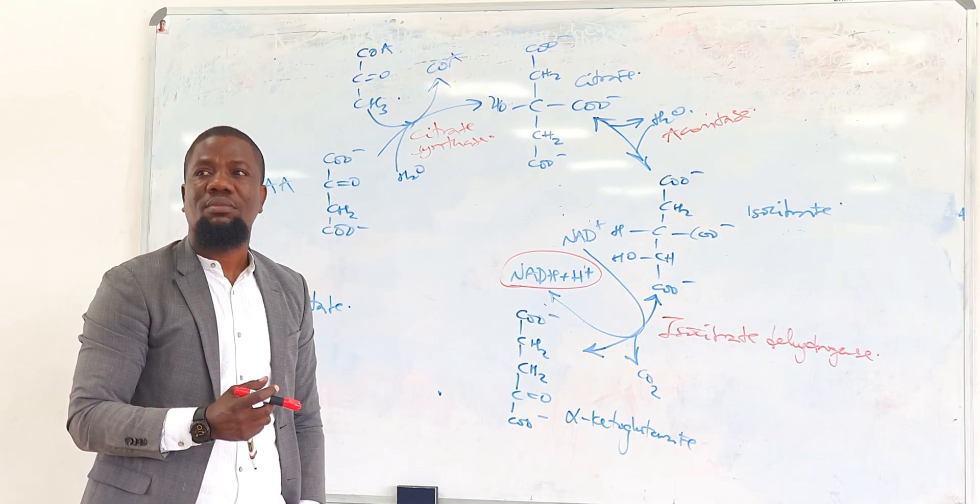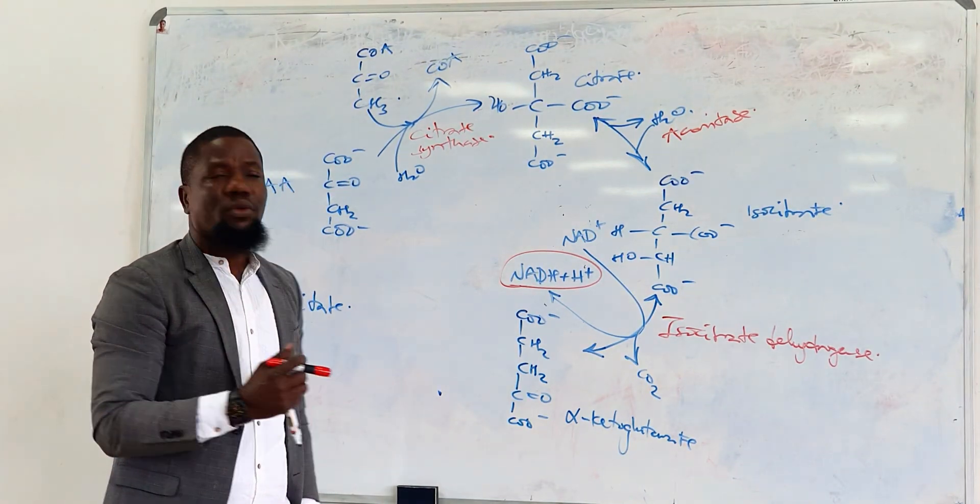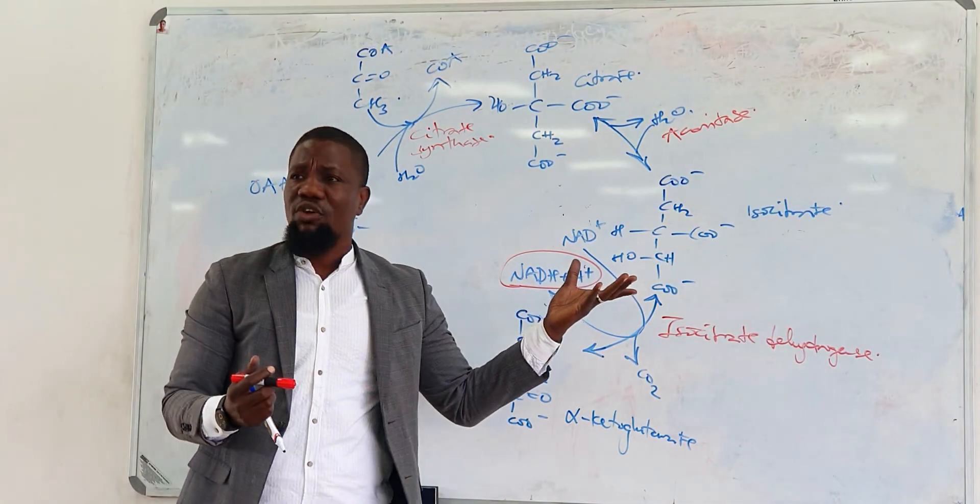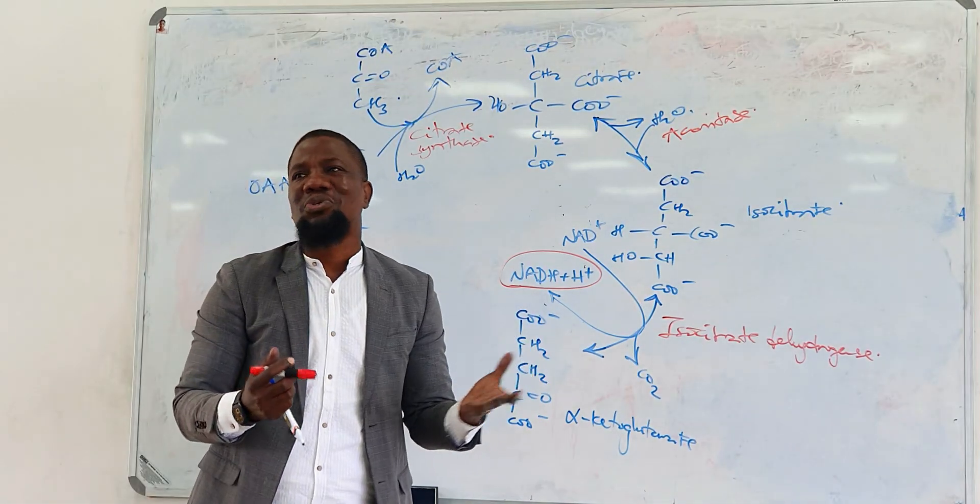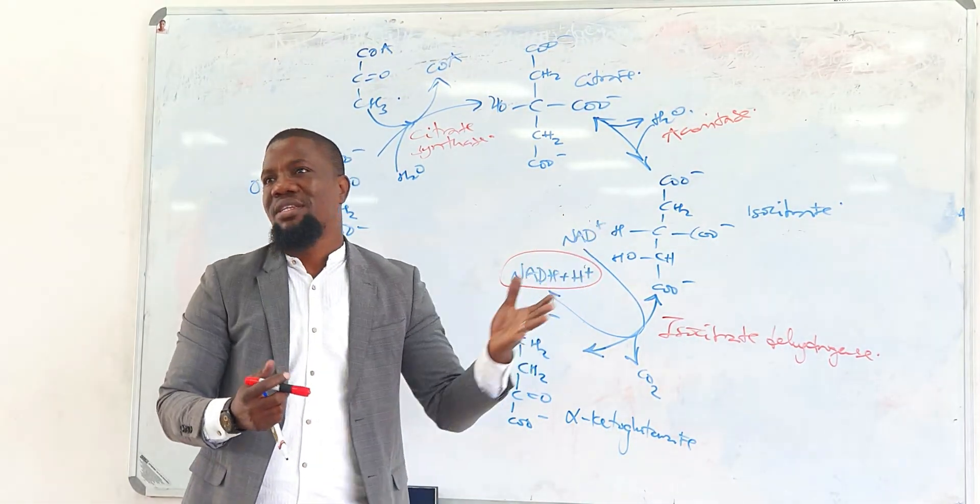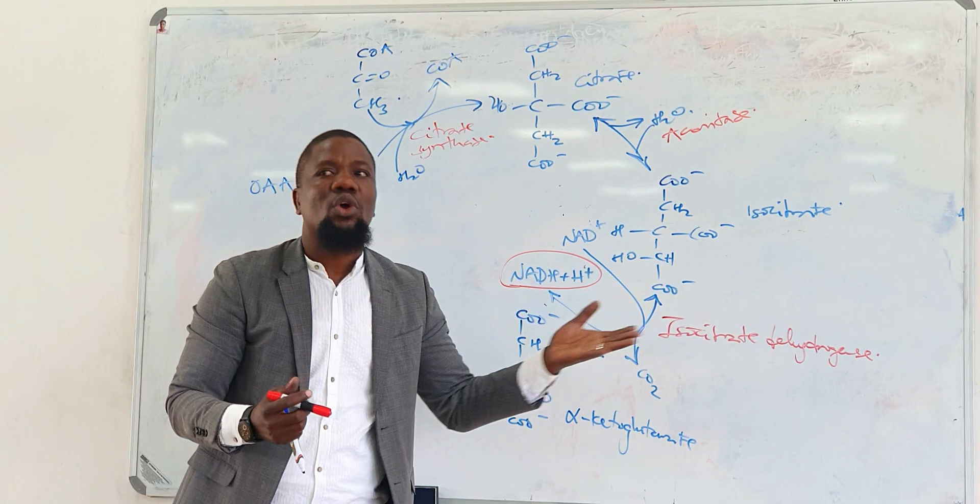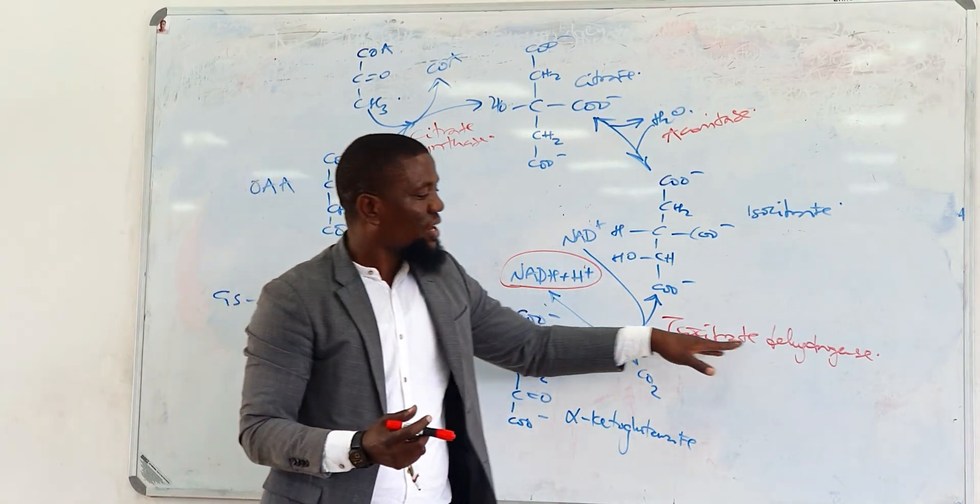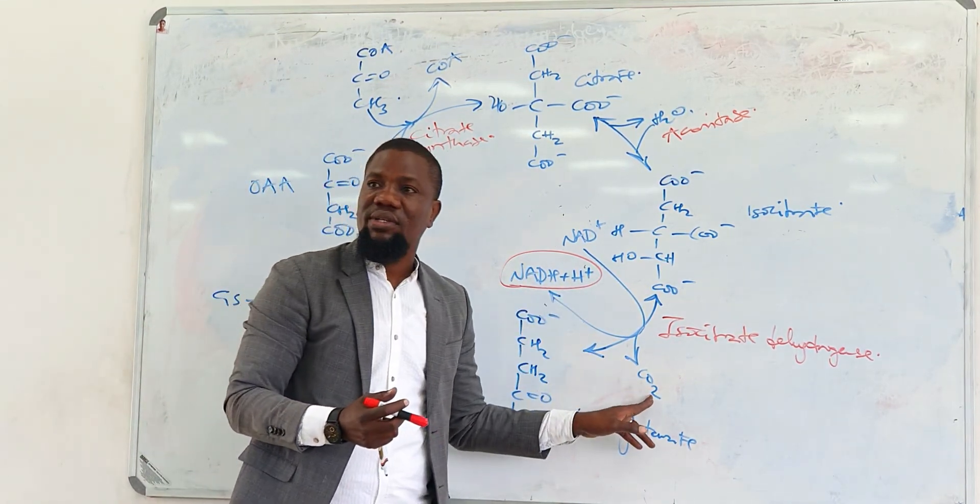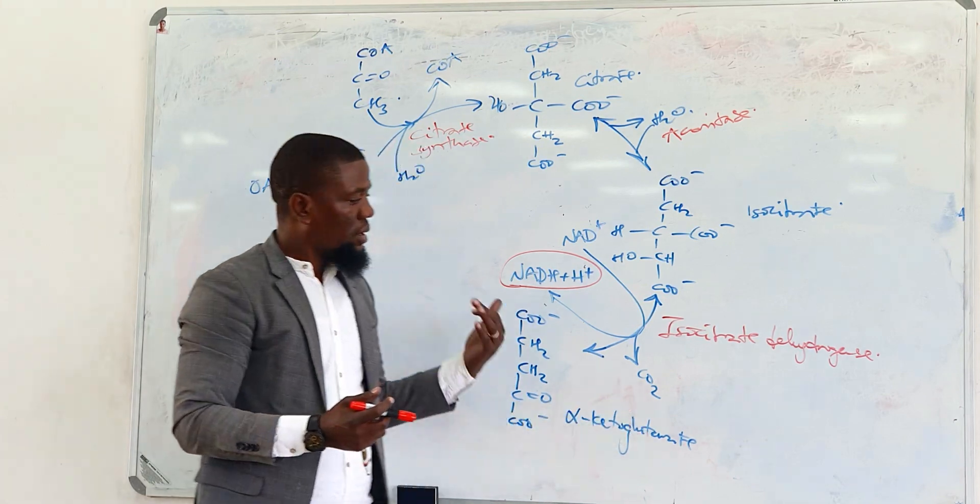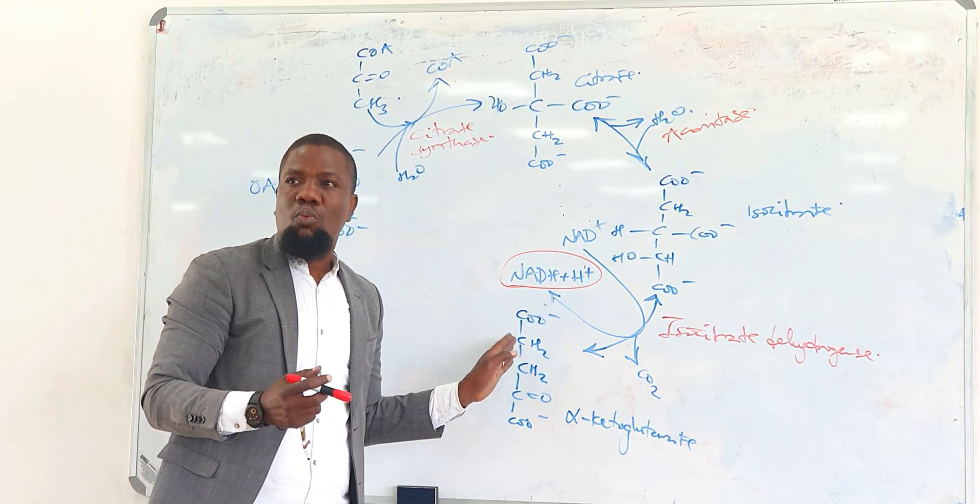Decarboxylase? Well, that's an interesting way of thinking, but if you remember even the conversion of pyruvate to acetyl-CoA, the enzyme was not necessarily called pyruvate decarboxylase. It's called pyruvate dehydrogenase complex. This one is isocitrate dehydrogenase because the main reaction here is the oxidation, and through this oxidation the carbon dioxide also comes off.